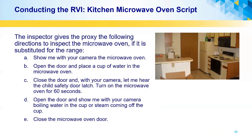Now we're going to look at the microwave oven. The inspector gives the proxy the following directions to inspect the microwave oven if it is substituted for the range. Show me with your camera the microwave oven. Open the door and place a cup of water in the microwave oven. Close the door. With your camera, let me hear the child safety door latch. Turn on the microwave oven for 60 seconds. Open the door and show me with your camera boiling water in the cup or steam coming off the cup. Close the microwave oven door.